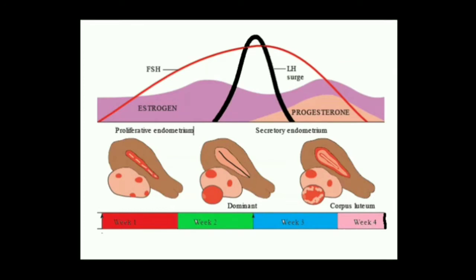The first day of the cycle is considered the first day of bleeding or menstruation. The hypothalamic-pituitary-ovarian axis regulates the normal menstrual cycle.